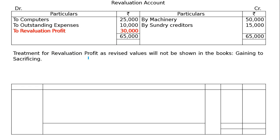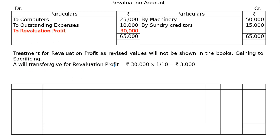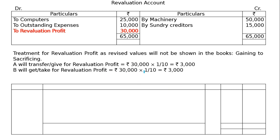Treatment for revaluation profit — as revised values will not be shown in the books — it is gaining to sacrificing. Kyunki revised values will not be shown in the books, isliye gaining to sacrificing karenge. A will transfer and give revaluation profit 30,000 ka 1/10 = 3,000, and B will receive 3,000. Give and take — A's capital account will be debited, B's capital account will be credited.